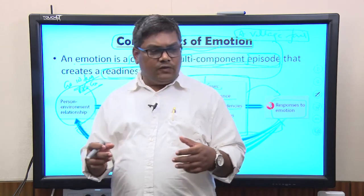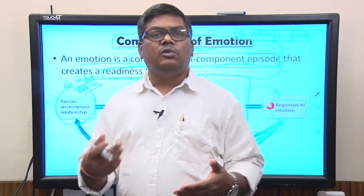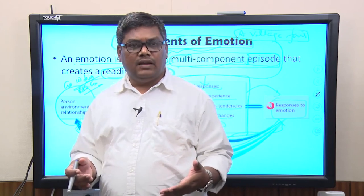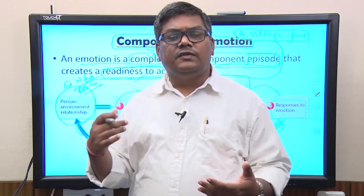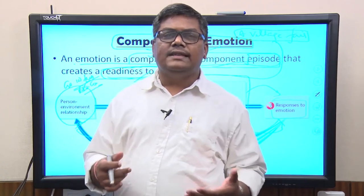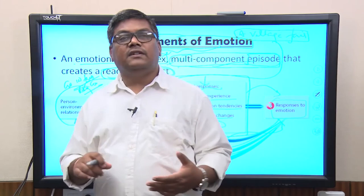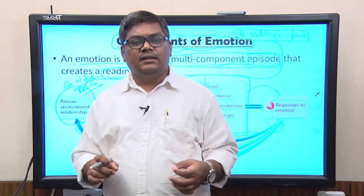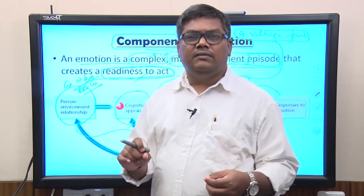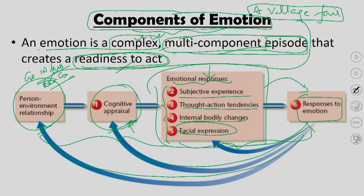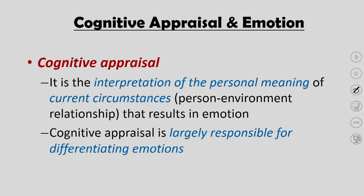As I said, emotion is not a single-process system. It generates through a cascade of processes, one following the other, leading to a final response. The first step is the person-environment relationship. If you are passing through a village fair and decide not to enter, you will not feel any emotion. But the moment you interact with the fair, the process of cognitive appraisal starts — a cascade of processes leading to the final emotional response and related behavior.